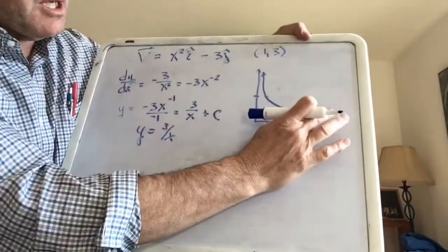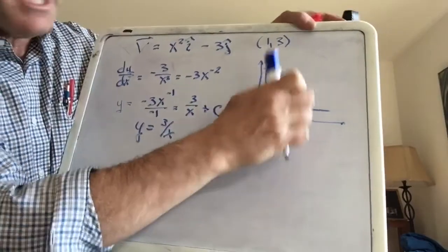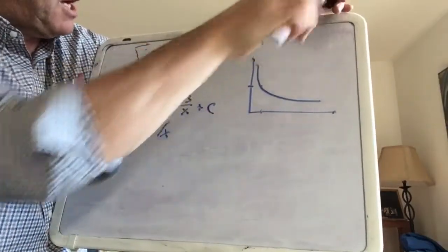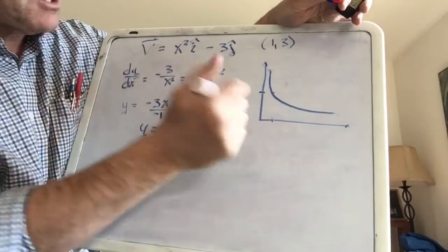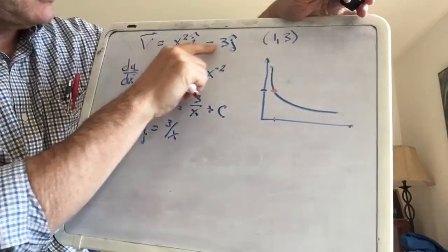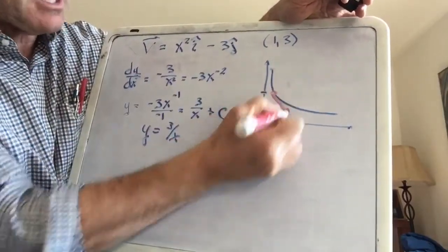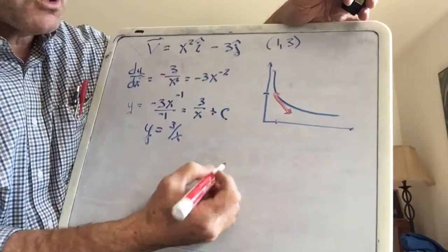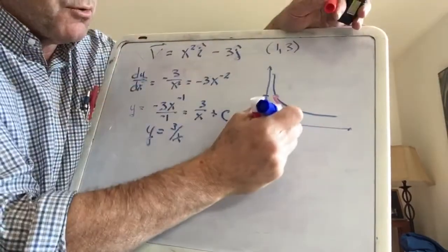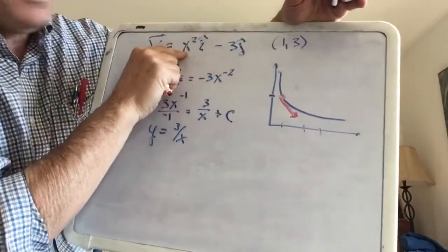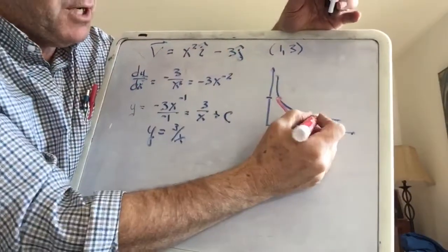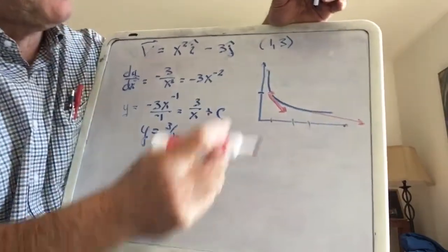Integrating: if I have 3x to the negative two, that's a polynomial — raise the power by one and divide. Negative two plus one is negative one, divide by negative one, I get 3 over x plus c. With x=1 and y=3, c equals zero. So the streamline equation is y equals 3 over x. Let's graph that. The flow is for x greater than or equal to zero. To get the direction, figure out a velocity vector: at (1,3) we get over 1 and negative 3 in y.